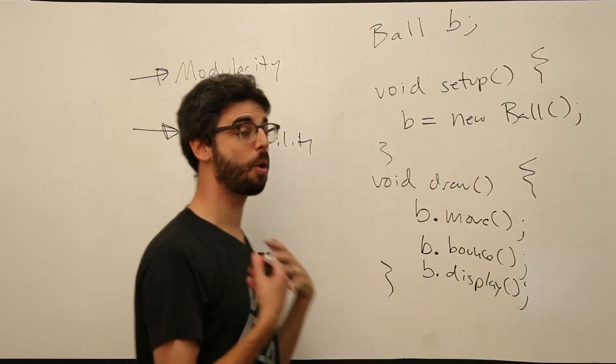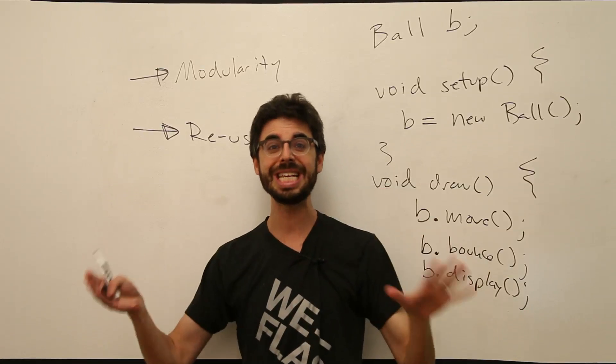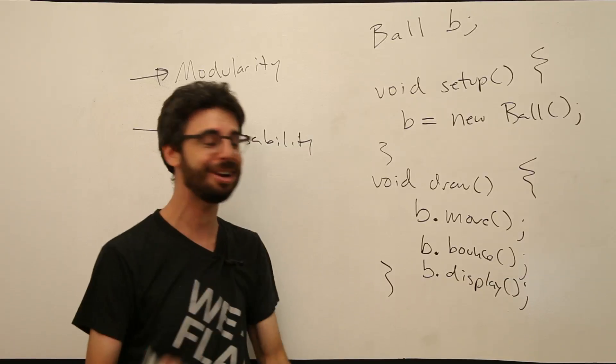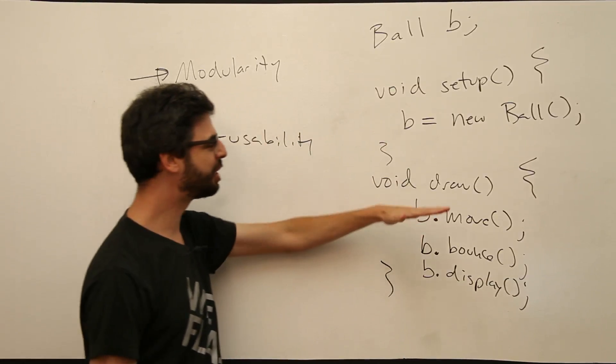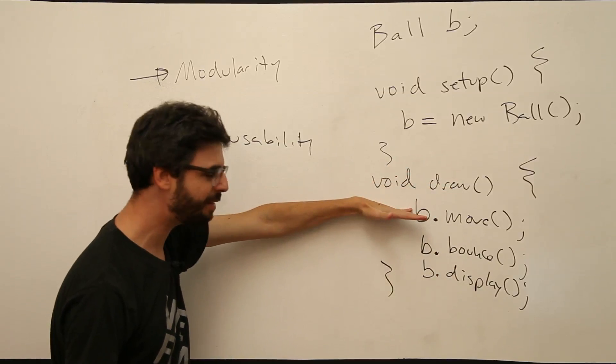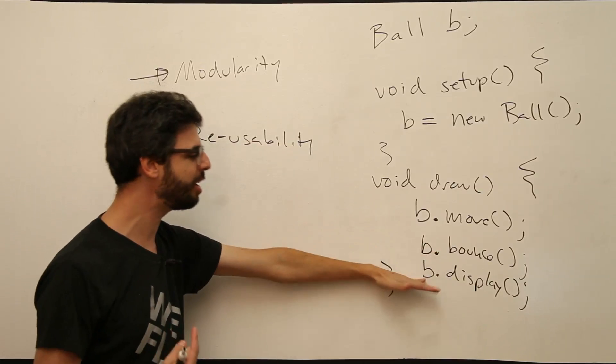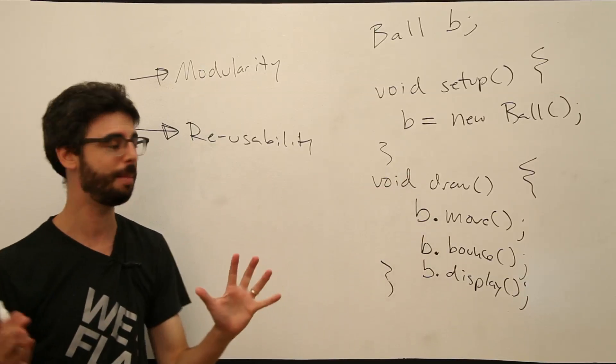Now this is not making our program more efficient for processing, for the computer. No one really cares about it from the computer standpoint. But we, the human being right here, can feel more comfortable with this. It's modular. We have sections. We have a function that's being called to move the ball, bounce the ball, display the ball. These are modular pieces in our program now.